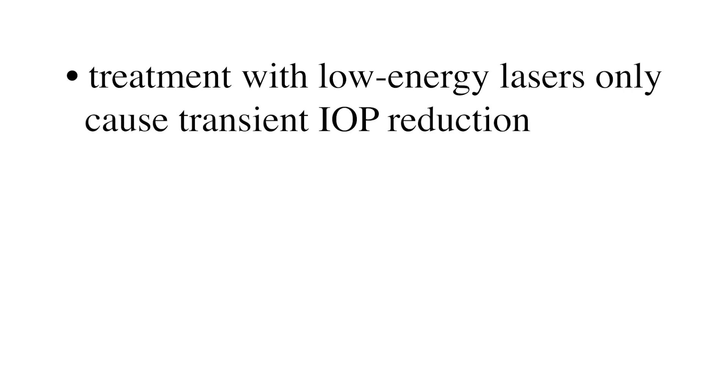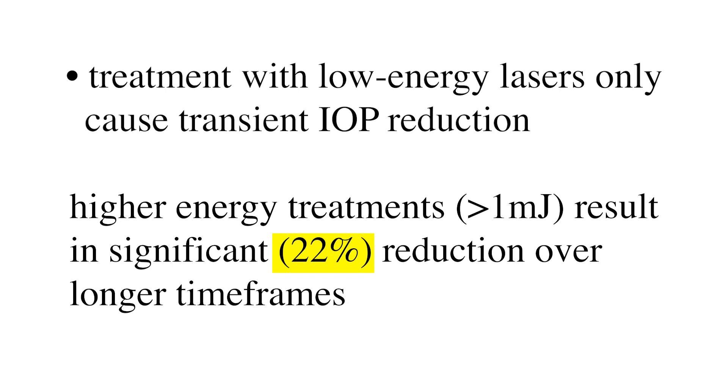Now let's talk about efficacy. In patients treated with lower energy lasers — that is, 0.8 mJ lasers — intraocular pressure lowered at the one-month follow-up, but it returned back to its original level after six months. In other words, treatment with a 0.8 mJ laser seems to cause a temporary drop in intraocular pressure, but it doesn't last. It's a much better story for higher energy lasers. Patients treated with lasers more powerful than 1 mJ experienced an average of 22% intraocular pressure reduction after six months. When patients were treated with sufficiently high energy lasers, the treatment proved to be efficacious and long-lasting.